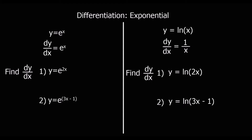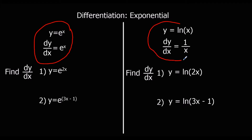This video is about differentiating functions with e and functions with ln. There are two outcomes we need to know: if y equals e to the power of x, dy/dx is also e to the power of x. And if y equals ln x, dy/dx is 1 over x. So there are only two new bits of information here.